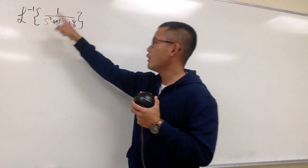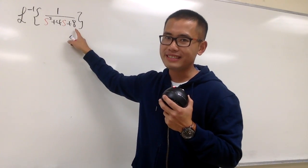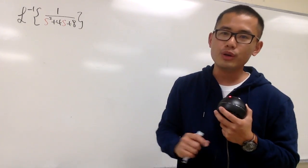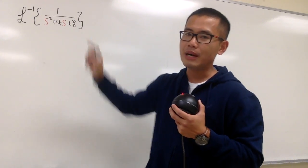All right, we're going to do the inverse Laplace of 1 over s squared plus 4s plus 8. As you can see on the bottom here, we cannot factor that and it does not have any real roots. So that means we will have to complete the square right here.